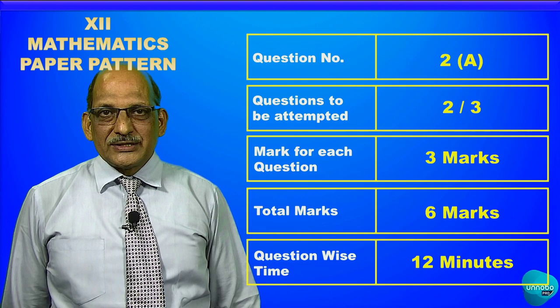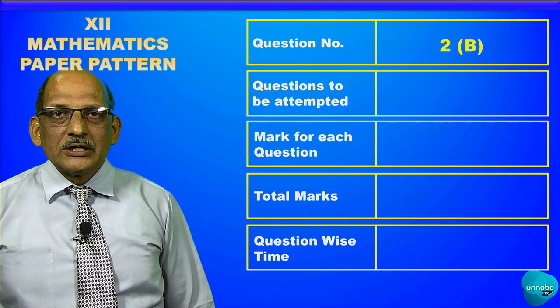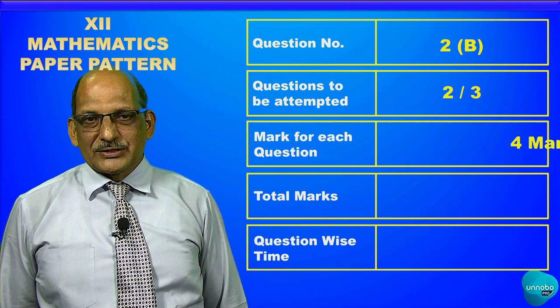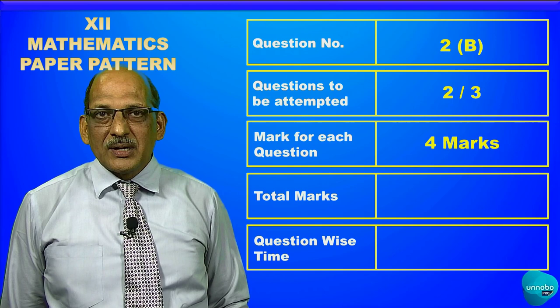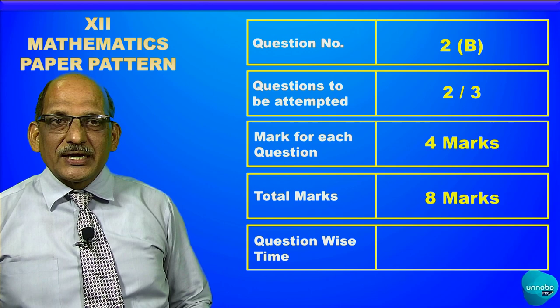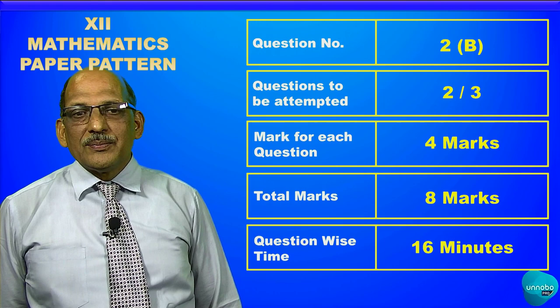In sub-question 2B, you also have to solve two questions out of three. Each question carries four marks, whereas in 2A each question carries three marks. Total marks for question number 2B are eight marks.